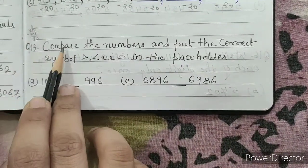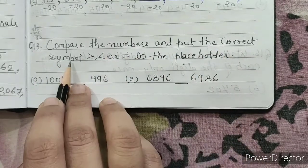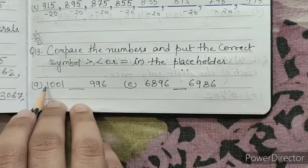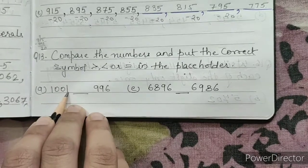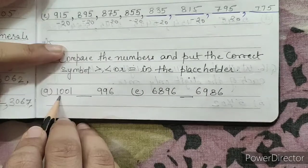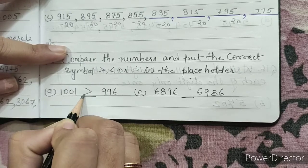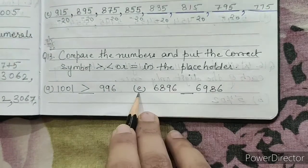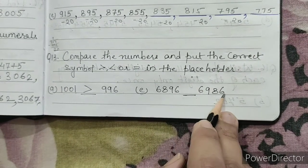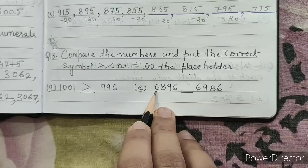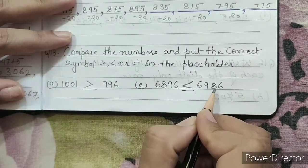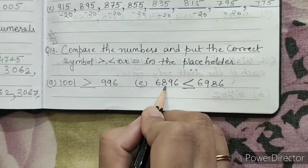Question number 13: Compare the numbers and put the correct symbol — greater than, less than, or equals — in the placeholder. Part A: 1001 versus 996. We have to compare the values. 1001 is greater, so put the greater than sign. Part E: 6896 versus 6986. We have to compare the values — 6896 is less than 6986.